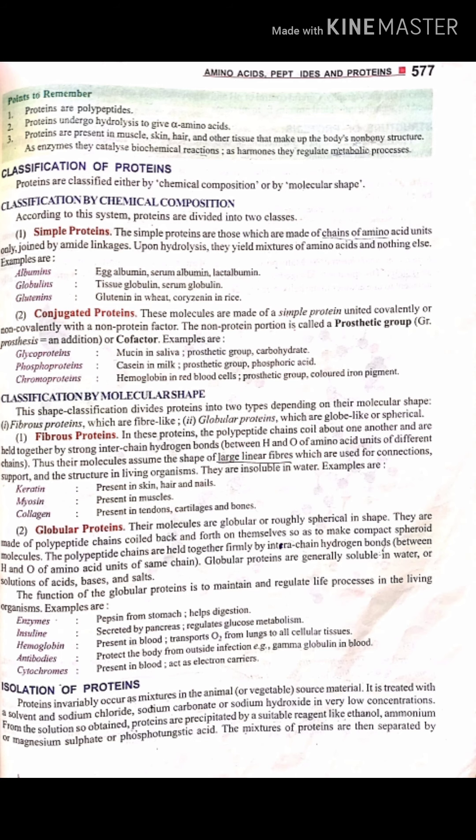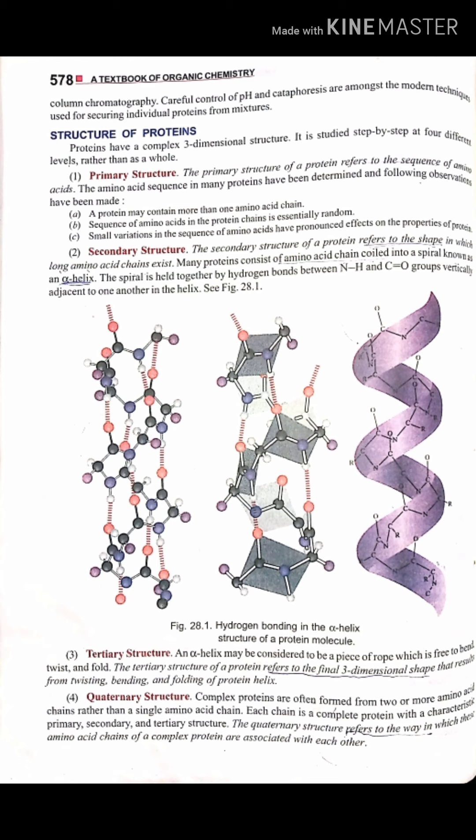Proteins have a three-dimensional structure that we study at four different levels or categories. The first is the primary structure, which refers to the specific amino acid sequence of the protein. Each protein has a unique amino acid sequence, and differences in this sequence result in very different protein properties.